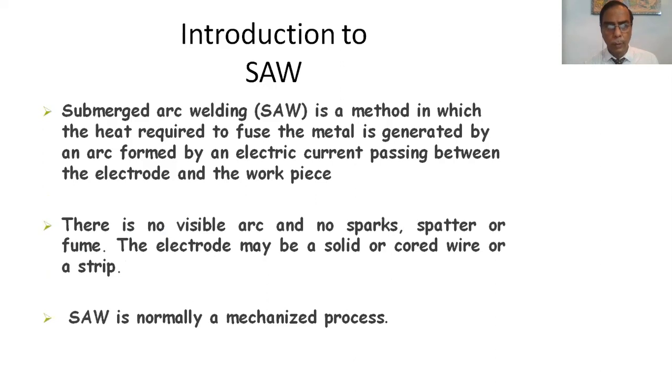Introduction to SAW. Submerged Arc Welding is a method in which heat required to fuse the metal is generated by an arc formed by an electric current passing between the electrode and the workpiece. There is no visible arc and no sparks, spatter, or fume. The electrode may be a solid or cored wire or a strip. SAW is normally a mechanized process.